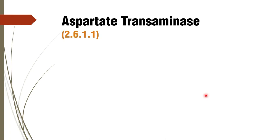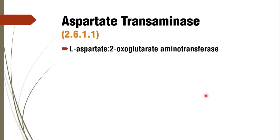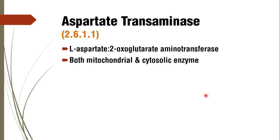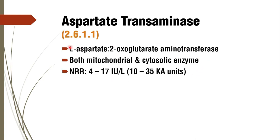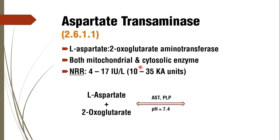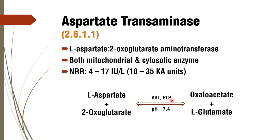Coming to aspartate transaminase, its enzyme classification number is 2.6.1.1 — L-aspartate 2-oxoglutarate aminotransferase. Aspartate transaminase is both mitochondrial and cytosolic, whereas alanine transaminase is only cytosolic. The normal reference range is 4 to 17 international units per litre, approximately 10 to 35 King-Armstrong units. The AST-catalyzed reaction involves transfer of an amino group from an amino acid to a keto acid via pyridoxal phosphate, producing L-glutamate and oxaloacetate, with a pH requirement of 7.4.